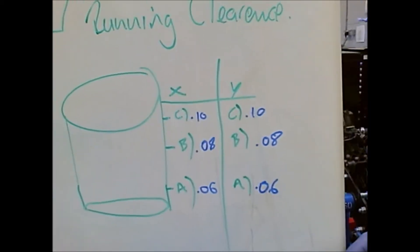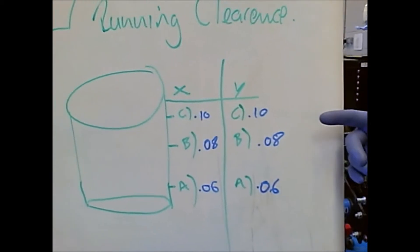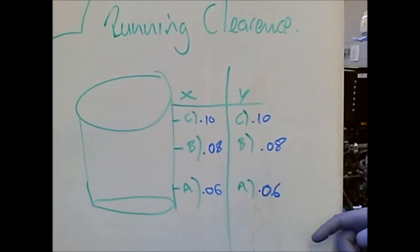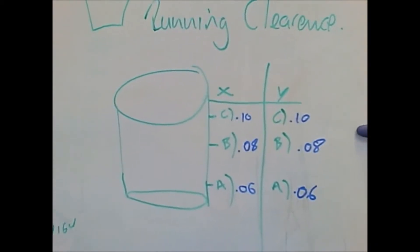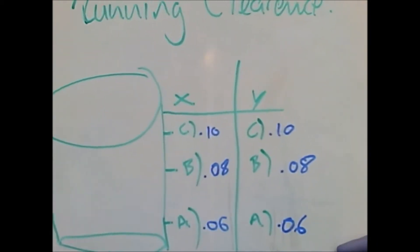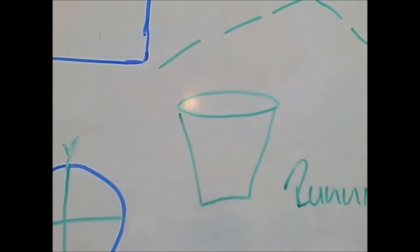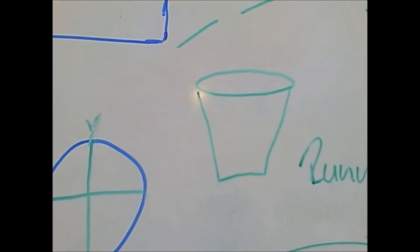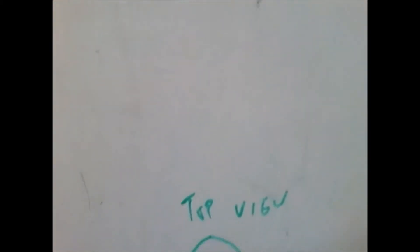These measurements show the running clearance which is the gap between the piston and the cylinder wall. As you can see, the measurements of the running clearance are larger at the top of the cylinder than they are at the bottom. This shows the cylinder has conicity. If the Y axis had larger readings than the X axis, this will show the cylinder has ovality.